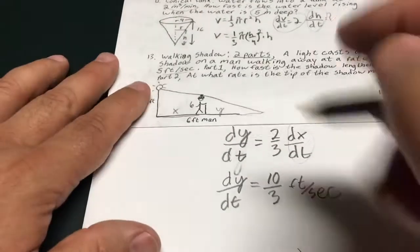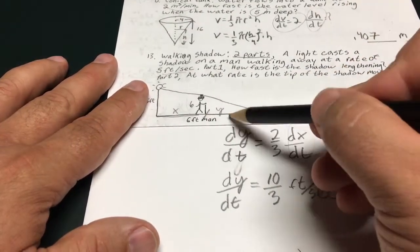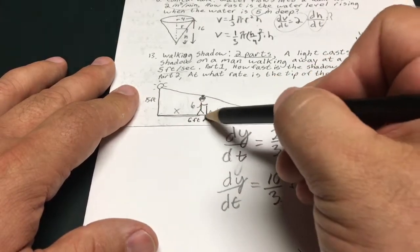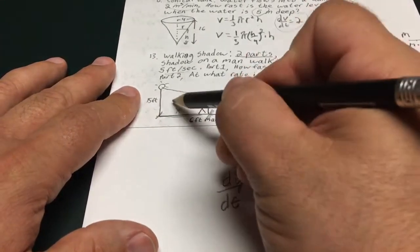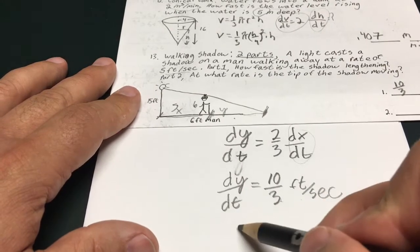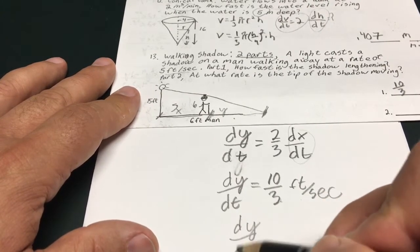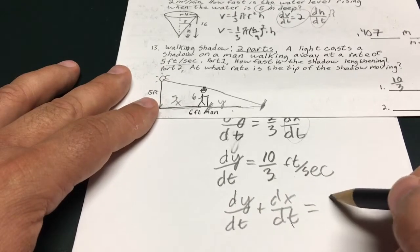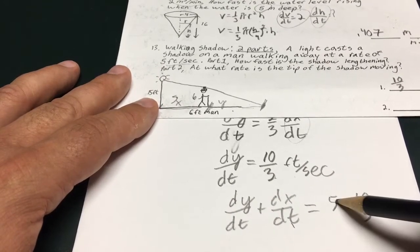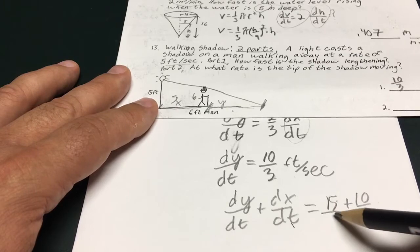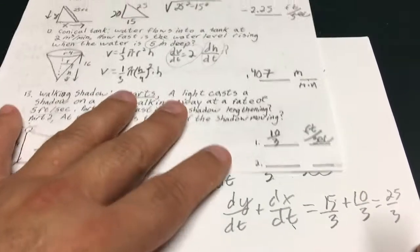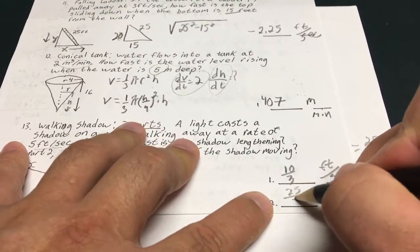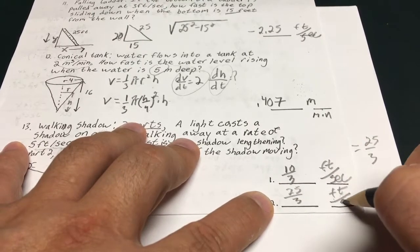Now I want to find out how fast the tip is changing. So this length is changing at 10/3 feet per second. And this length from the post to him is changing at 5 feet per second. So I think I'm just going to add those. So it's basically dy/dt plus dx/dt. And that's going to give me 5 plus 10/3. 15 over 3. That's going to give me 25/3 for part 2. 25 over 3 feet per second.